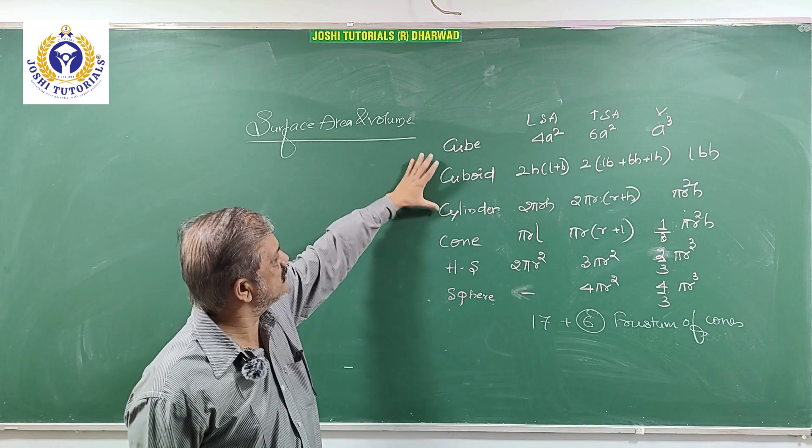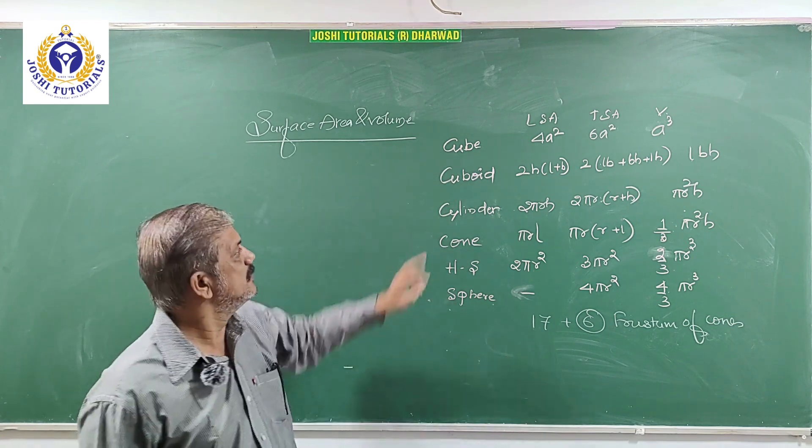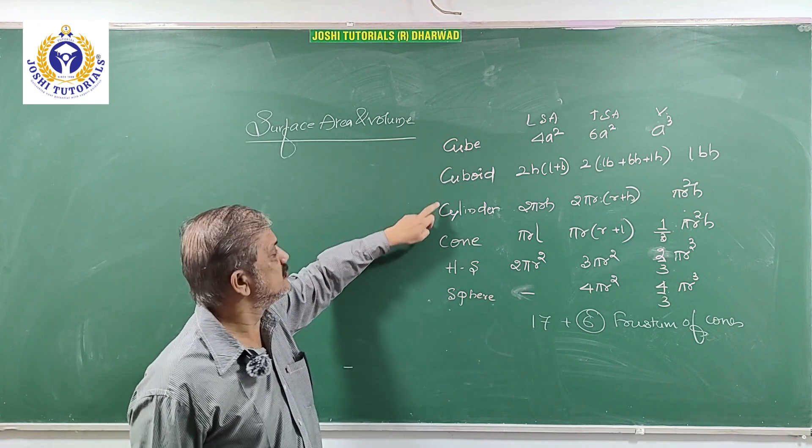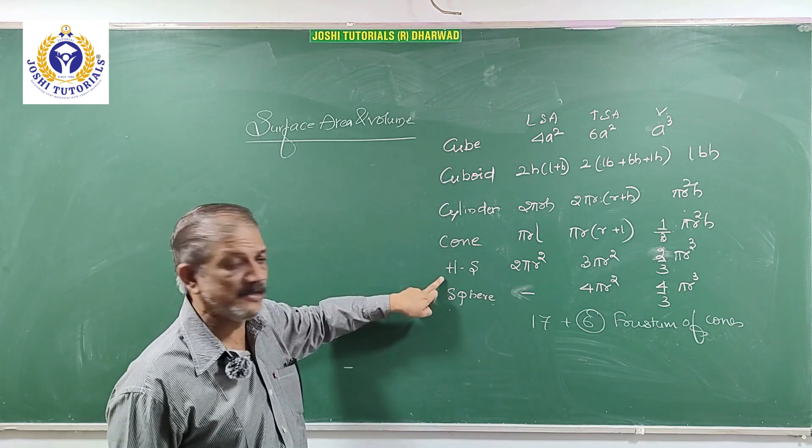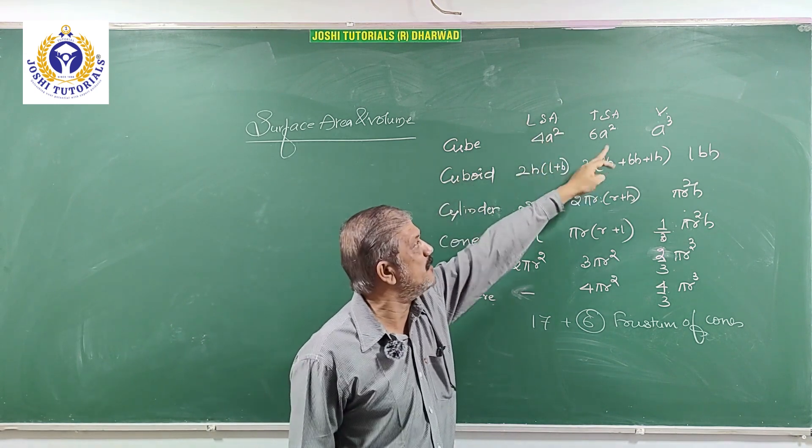Here I have written some six important solid figures: cube, cuboid, cylinder, cone, hemisphere, sphere, lateral surface area, total surface area, and volume.